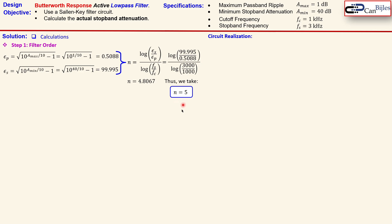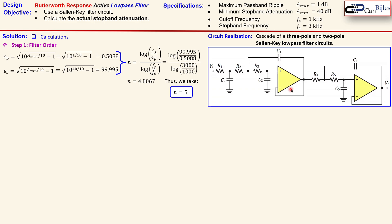To realize this circuit we need a fifth-order Sallen-Key filter. This can be implemented as a cascade of a three-pole and a two-pole Sallen-Key low-pass filter circuit. So the topology is: a three-pole Sallen-Key low-pass filter in cascade with a two-pole Sallen-Key low-pass filter. That is what we need to design — meaning we need to calculate all the component values. That is step two: the component values.